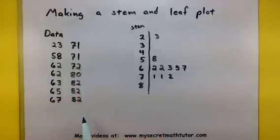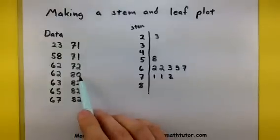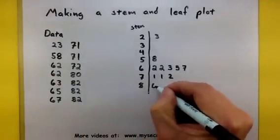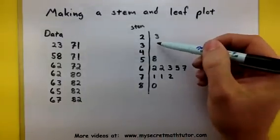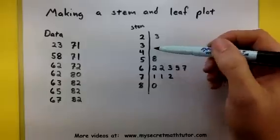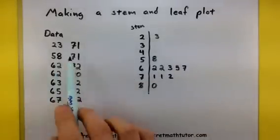And it looks like I have some 80's, an 80, 82, 82, 82. Now, with the 80, make sure you go ahead and you put in a 0. You don't want to leave it blank, because the blank means that you don't have any of those particular data points.